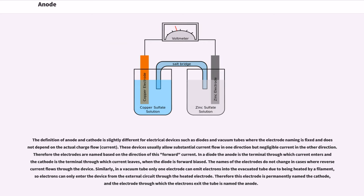The names of the electrodes do not change in cases where reverse current flows through the device. Similarly, in a vacuum tube only one electrode can emit electrons into the evacuated tube due to being heated by a filament, so electrons can only enter the device from the external circuit through the heated electrode. Therefore this electrode is permanently named the cathode, and the electrode through which the electrons exit the tube is named the anode.